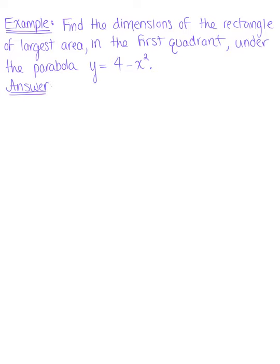Find the dimensions of the rectangle of largest area in the first quadrant under the parabola y equals 4 minus x squared. So here we're only given one piece of information. We have the parabola y equals 4 minus x squared and we want to find the rectangle underneath this parabola of the largest area.